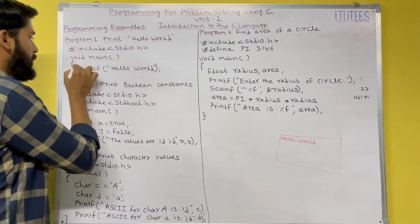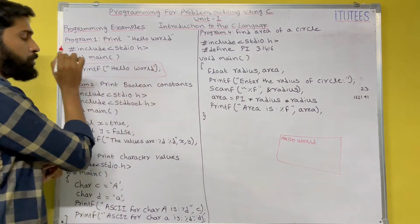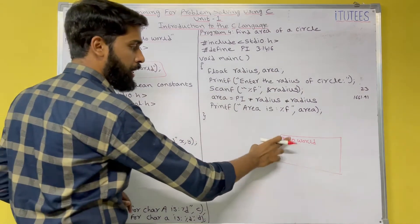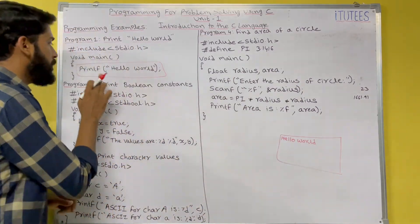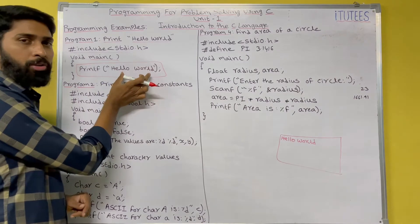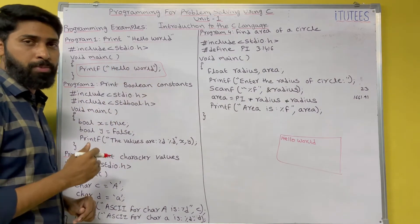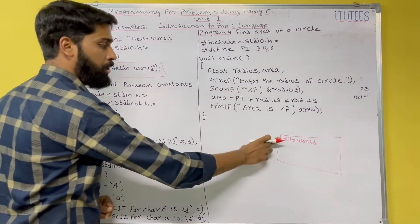Void main. In this main function, you are going to write the code. Here, our intention is you are going to print the message Hello World. You can use Printf. In double quotation, you are going to write the string Hello World. If you compile and execute this program, the output is Hello World.